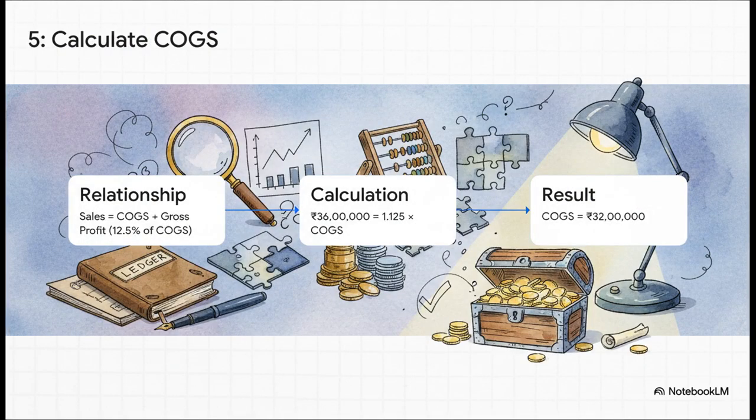Now pay very close attention here. This is a classic examiner's checkpoint. The clue says gross profit is 12.5% of cogs, not of sales. This is a crucial distinction. It means that sales actually represents 112.5% of cogs. So, we take our 36 lakhs in sales, we divide by 1.125, and we find our cogs is 32 lakh rupees. Please, don't fall into this common trap.